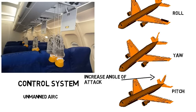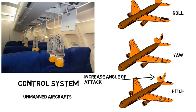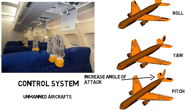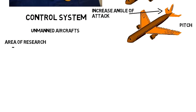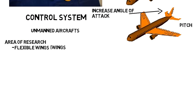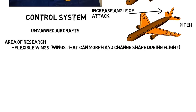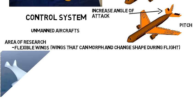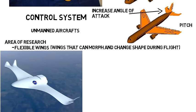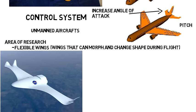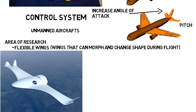We also have unmanned aircraft, so obviously those need really good control systems, as there's no direct pilot on the vehicle. One area of research being worked on is flexible wings, as in wings that can morph and change their shape during flight. This is being investigated by NASA as an example, to greatly improve flight efficiency and performance. Control systems would be required to change the wings during flight as needed.